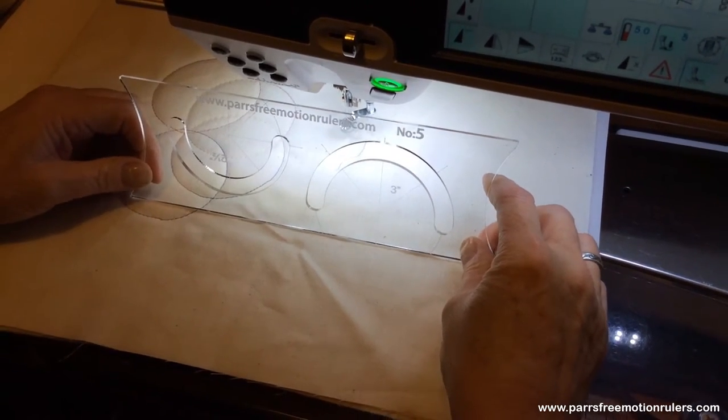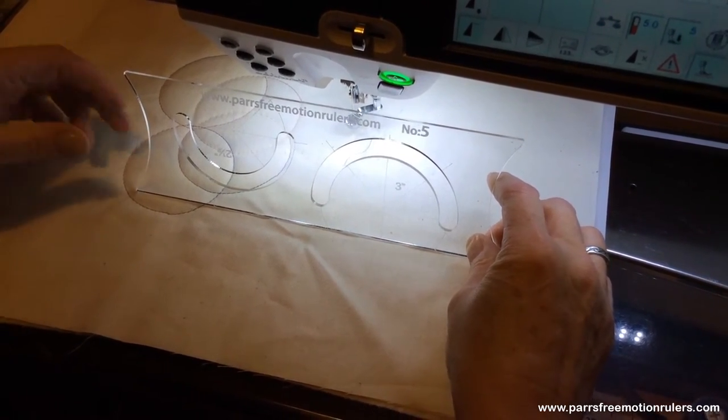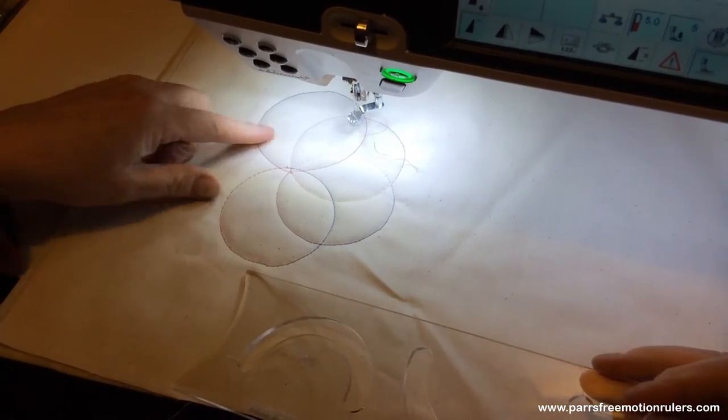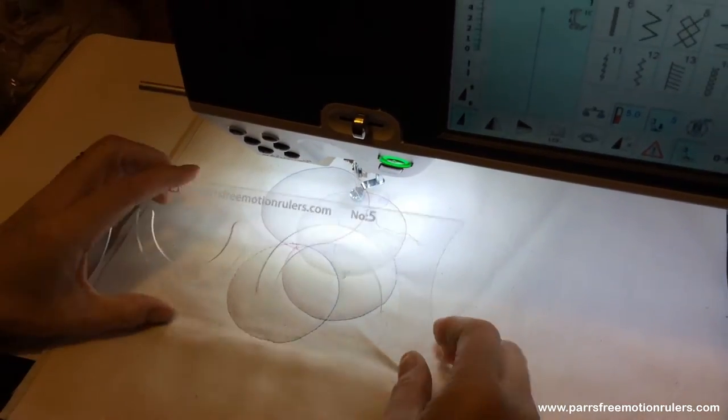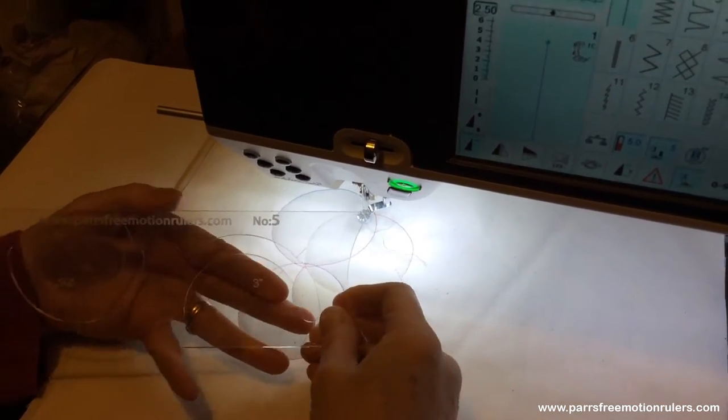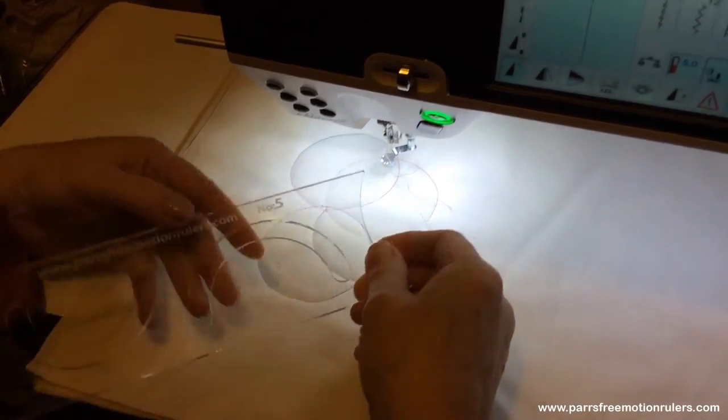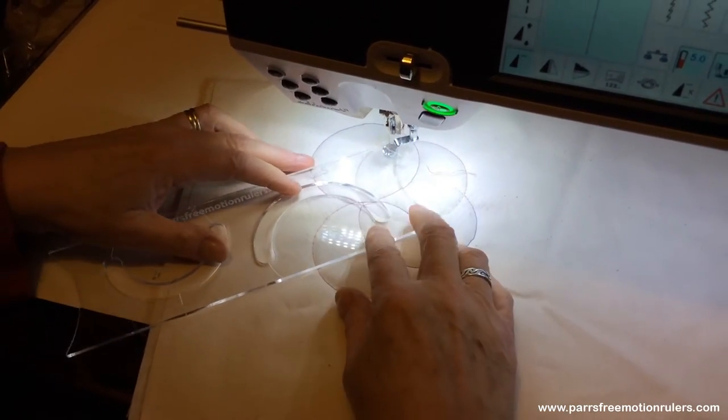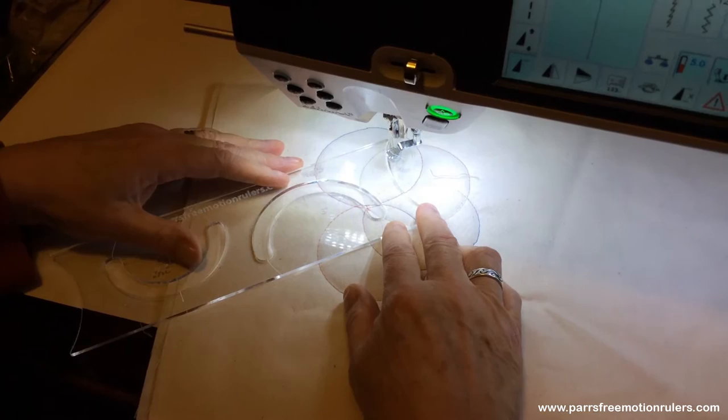Number five. Circles. I've started to do a circle of circles using the star on the center and putting that onto the last sewn line.